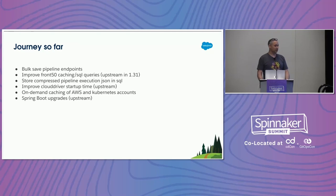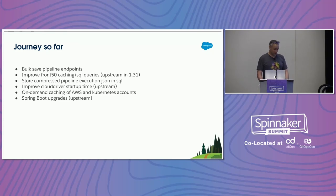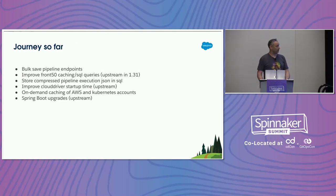To be smart about not hitting the database all the time, Front50 has an in-memory cache, and we did some work to make the caching more efficient and the SQL queries more efficient. I just got those upstream — they're merging to master in version 1.31 of Spinnaker, which doesn't exist yet but will very soon. All the features you'll hear me talk about today are behind a feature flag that's turned off by default.